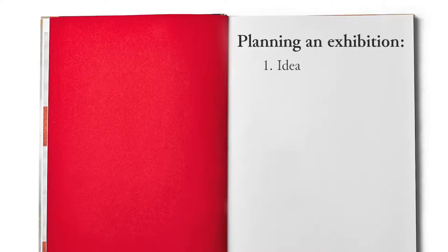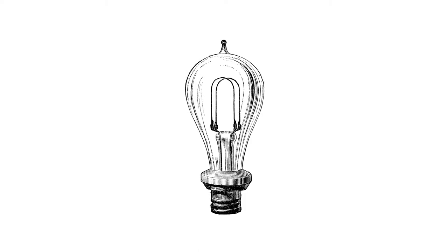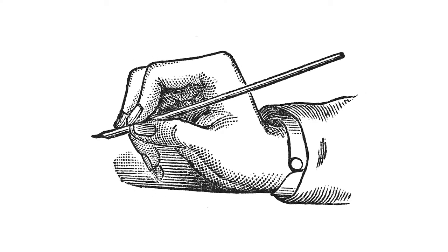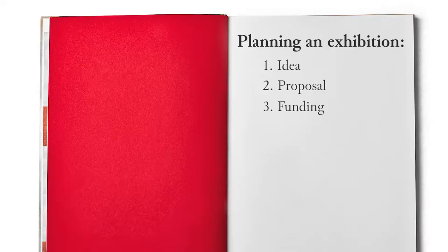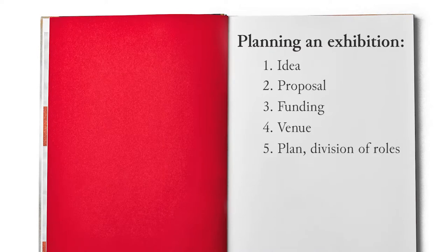The first step is to work on the idea at the base of the exhibition and choose the objects needed for the purpose. In case of contemporary art exhibitions, the choice of the artists is an essential task. Then the curator writes the proposal and identifies the possible funding options for the exhibition. The next step involves the search for the right venue, considering the dimensions and the characteristics of the spaces and the available resources in terms of people and materials. After the venue confirmation, the administrative tasks start. A detailed plan for each phase of the setting up of the exhibition, with a precise division of roles and duties among the staff members, must be drafted.